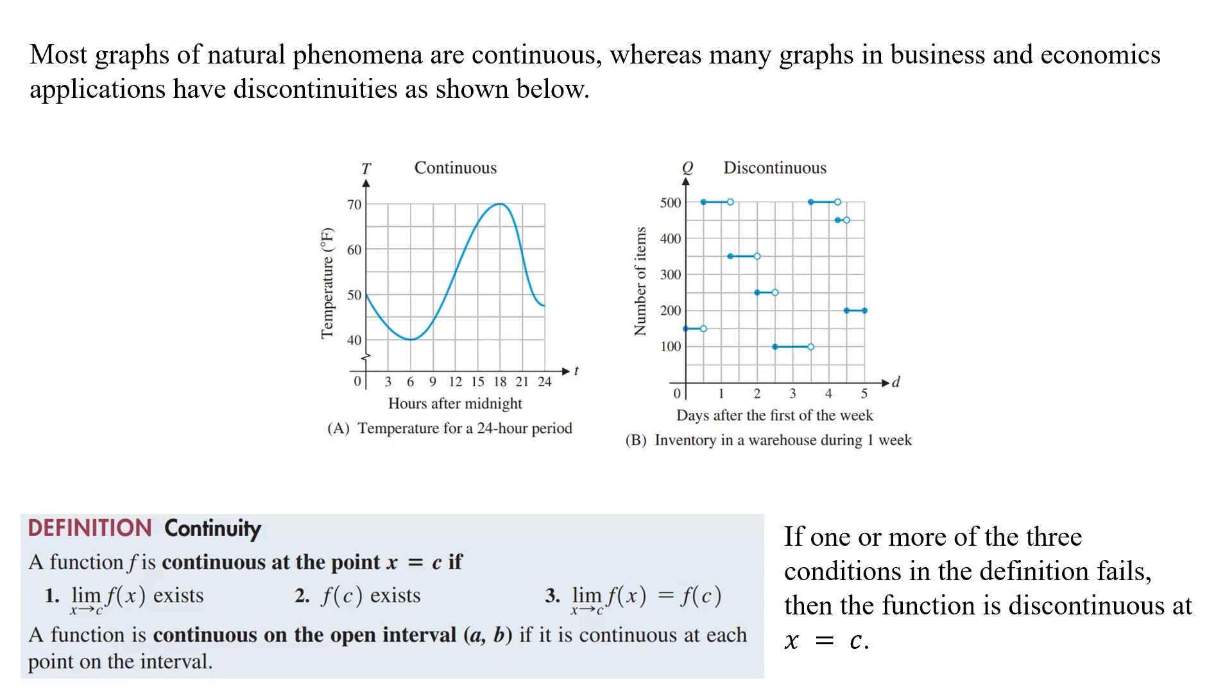So most natural phenomenon are actually continuous functions. There's usually not a jump. And so as we can see here, the temperature after so many hours after midnight, you can hold your pen down and you can follow the whole way and it doesn't jump around.